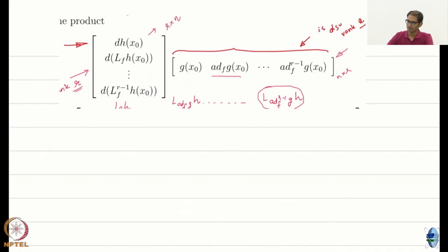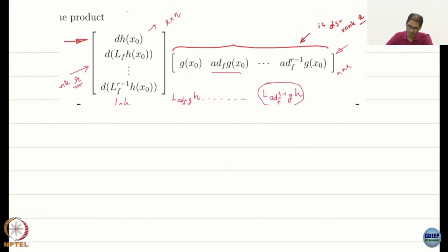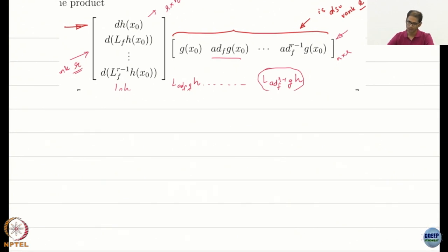Now, if you look at some of the terms in this product, we want to look at the rank of this product, so I have to multiply things out and see what happens. It is deliberately chosen in a very smart way so that it turns out to a nice structure. What will be the first row? Row 1 will be dh, I am going to forget the x0 argument, dh times g or I can write this inner product of dh g, dh add_f g, all the way to dh add_f^(r-1) g.